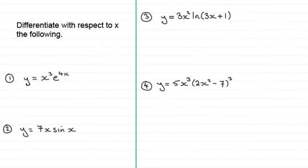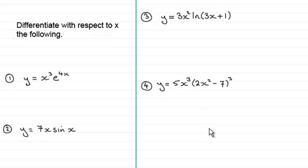Hi there. What I've got here is a summary exercise which is a follow-up to a previous video tutorial on how we go about differentiating products of functions of x using the product rule. If you'd like to try some of these questions, it might be that you're not familiar with differentiating trigonometric functions or exponential and natural log functions — if that's the case, maybe just leave those parts out. Pause the video, come back when ready, and check your work against my solutions.